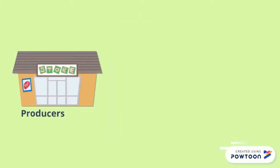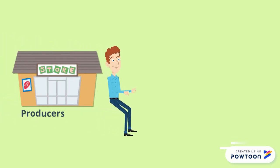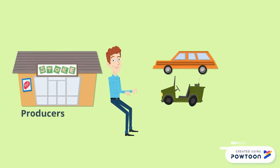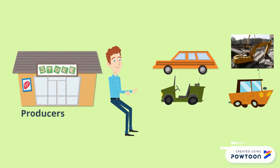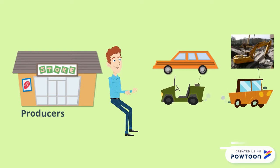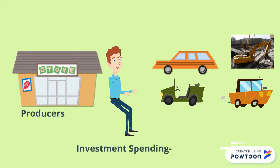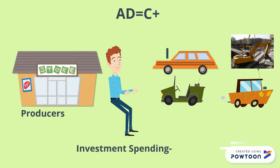The producer sector, or business sector, includes businesses or firms, and when they spend on goods, it is known as investment spending. The short form for investment spending is the letter I. Therefore, now we can say AD is equal to C plus I.